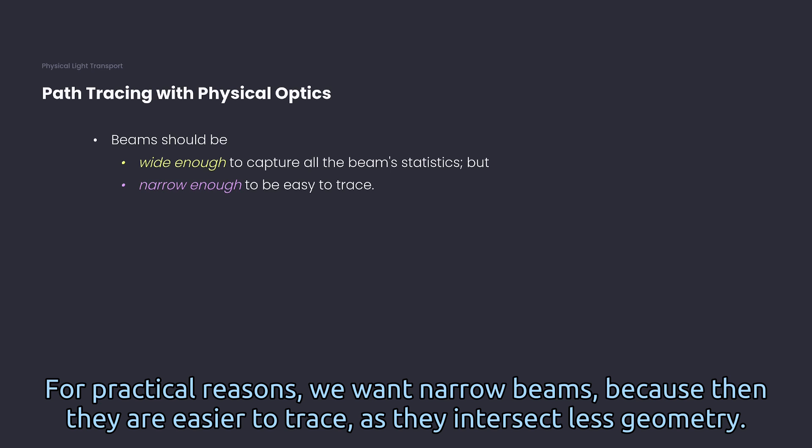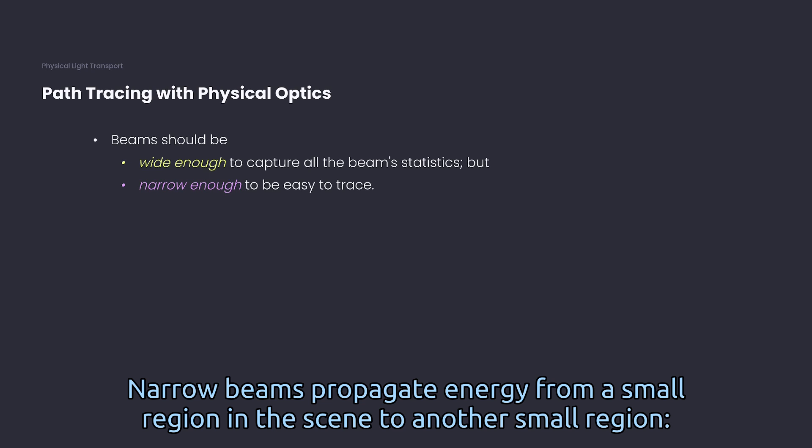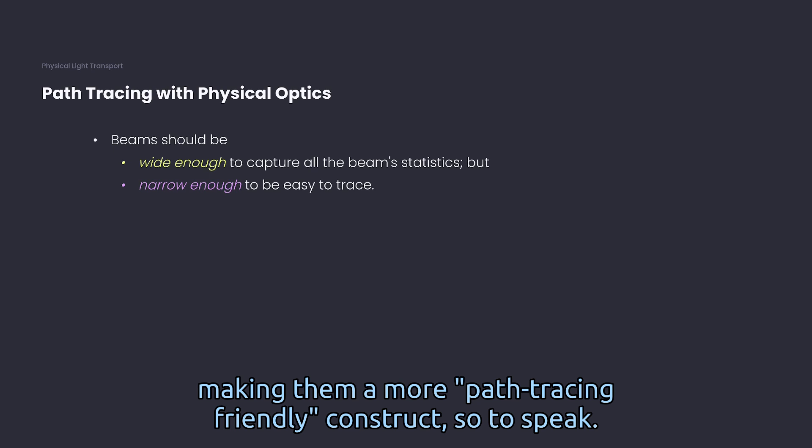For practical reasons, we want narrow beams, because then they are easier to trace as they intersect less geometry. Narrow beams propagate energy from a small region in the scene to another small region, making them a more path tracing friendly construct, so to speak.